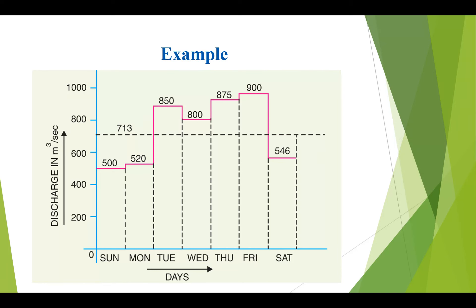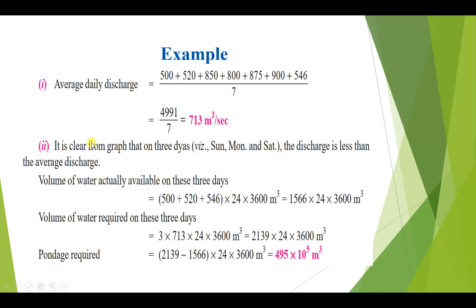From the graph it is clear that three days — Sunday, Monday, and Saturday — have a discharge rate less than the average. Their values are 500, 520, and 546 m³/s respectively, all below the average of 713 m³/s. The other four days have more discharge rate than the average value.